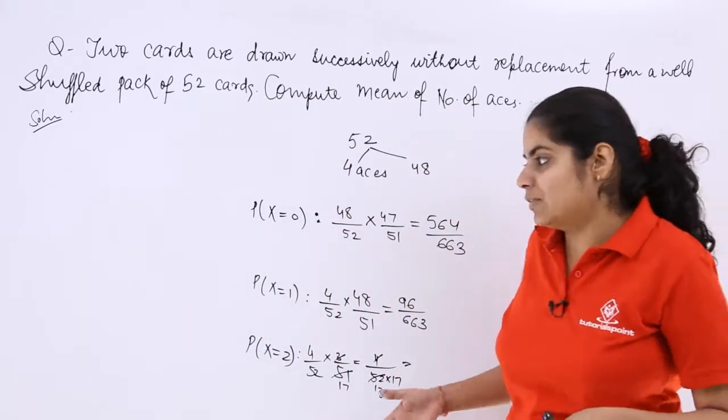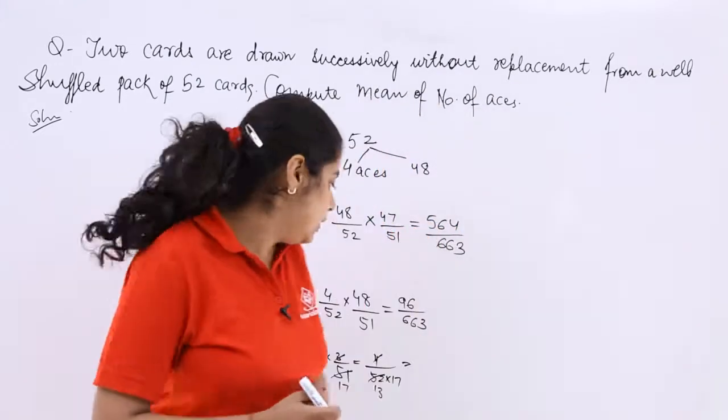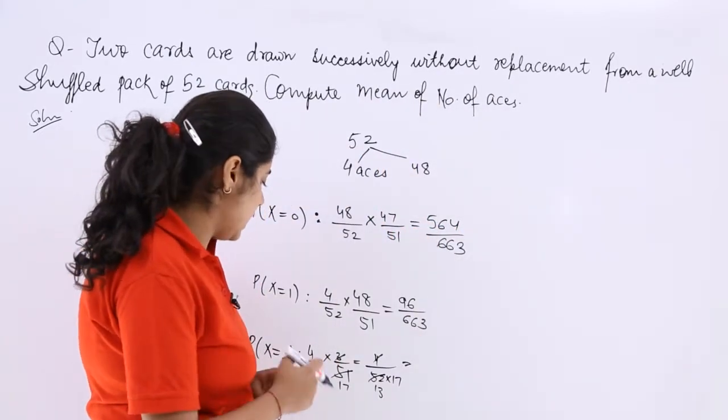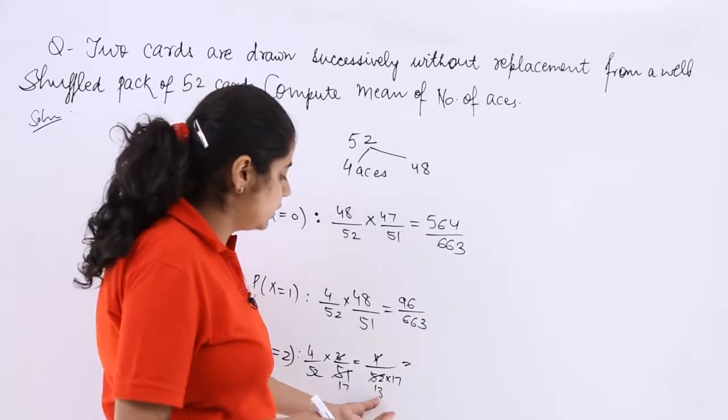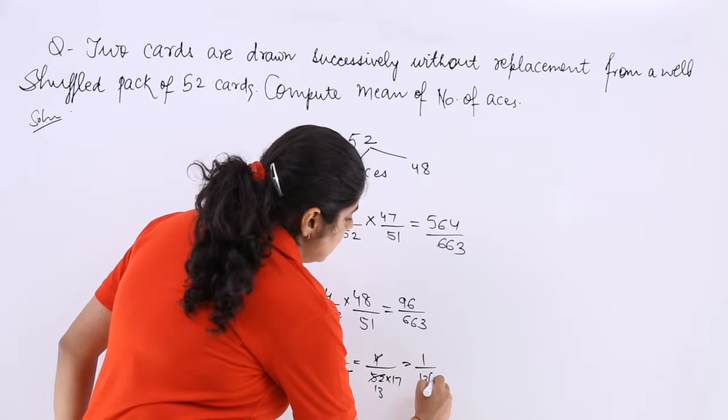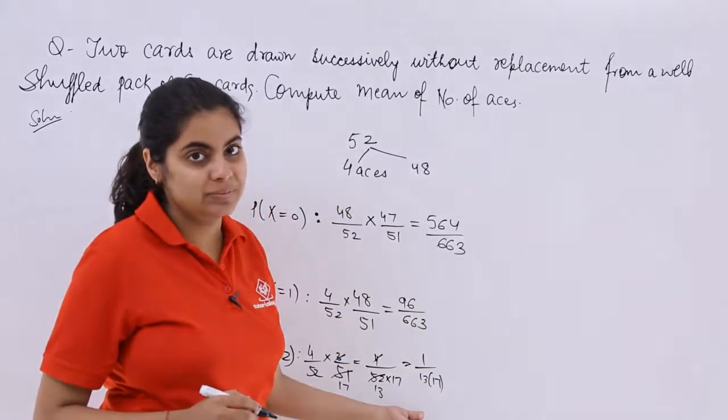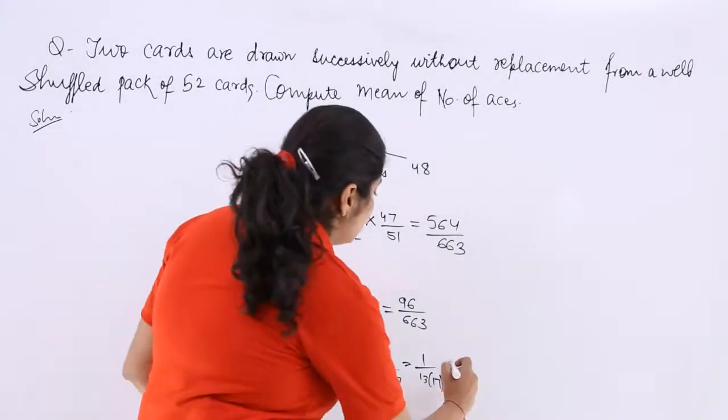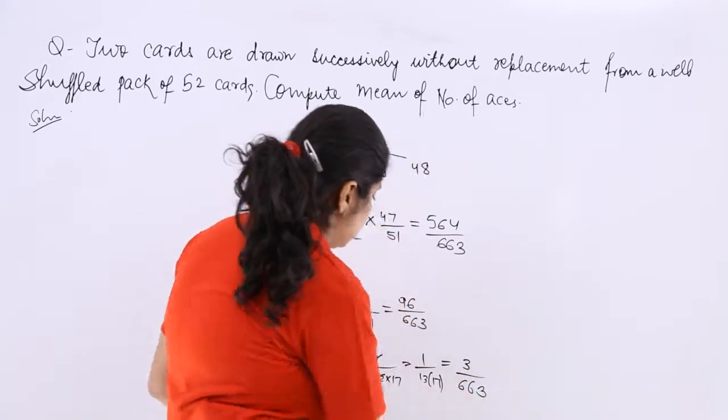So let's calculate the answer. The first thing that you have to make sure is that you cancel properly. If you don't want to cancel, the answer to this would be 3 over 663.